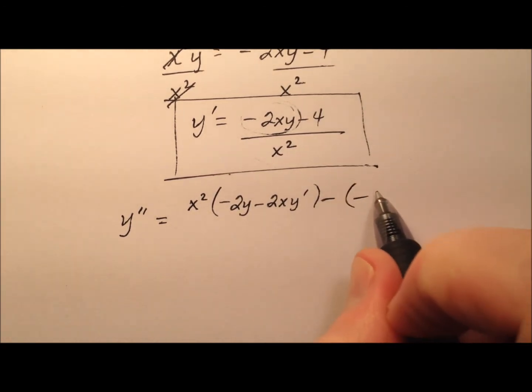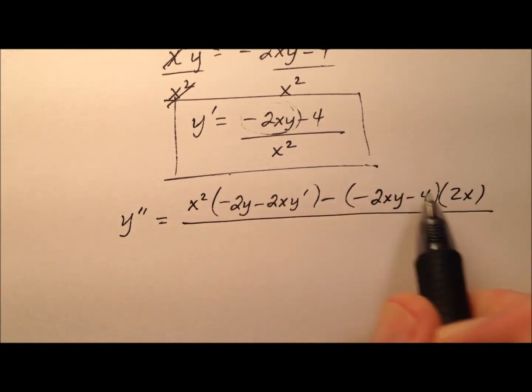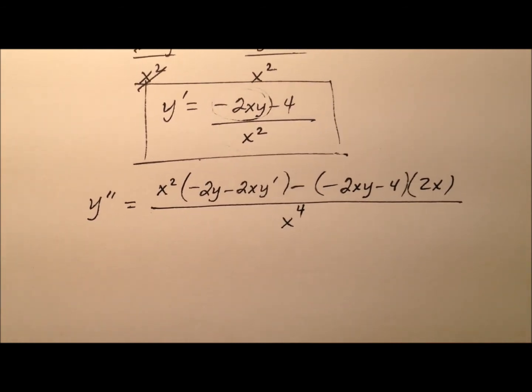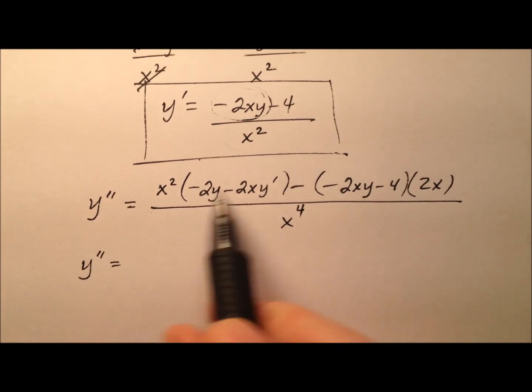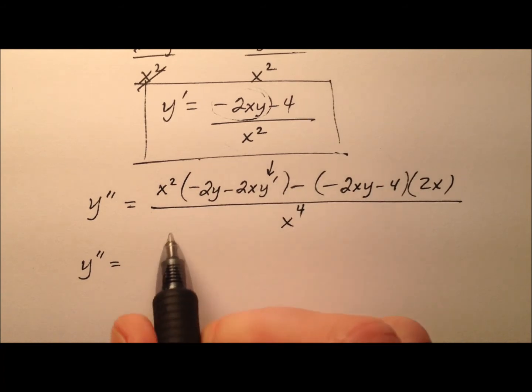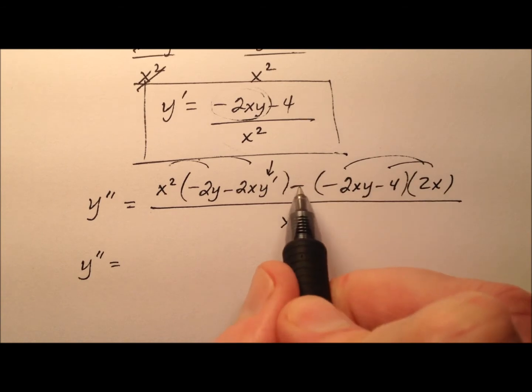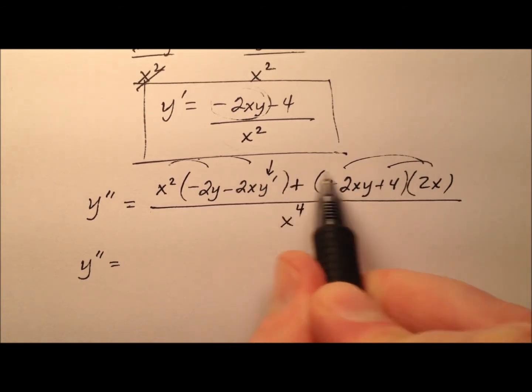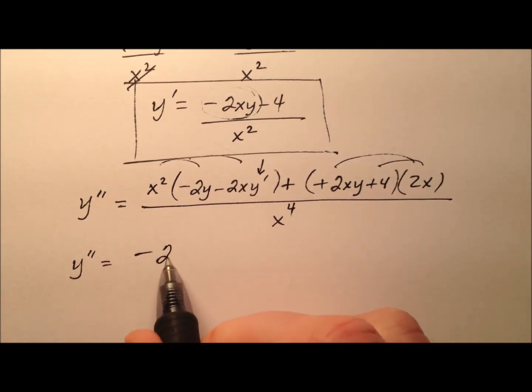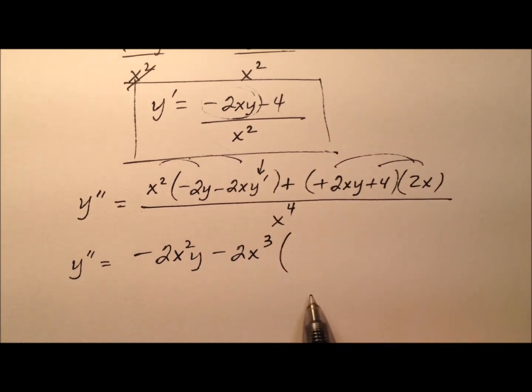Now minus the top, which is 2xy minus 4 times the derivative of the bottom and then square that denominator, which gives us x to the fourth. So we've got some cleaning up to do here. I notice I have a y prime I'll need to substitute in for. When we distribute here, let's distribute that negative through because that makes everything positive. So here we have negative 2x squared y minus 2x cubed y prime.